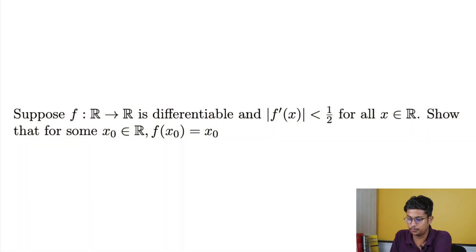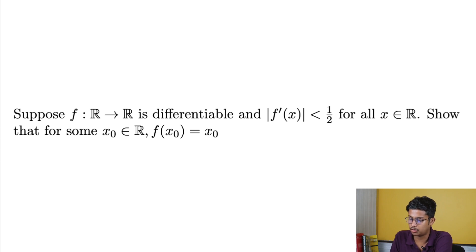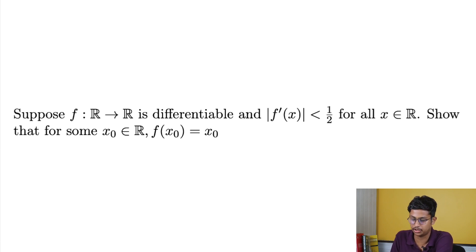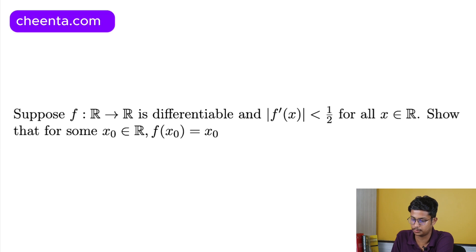The given problem is: suppose f: ℝ → ℝ is a differentiable function and |f'(x)| is less than 1/2 for all x belonging to ℝ, such that for some x₀ belonging to ℝ, f(x₀) = x₀. So we are finding a fixed point here.